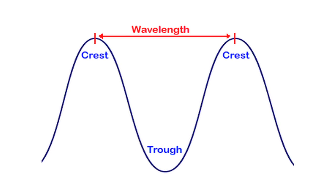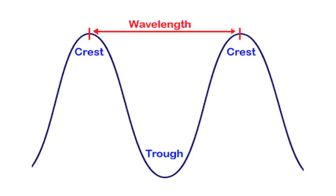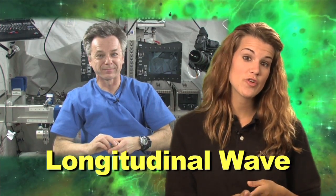Let's watch Canadian Space Agency astronaut Bob Thirsk on the International Space Station as he demos a different kind of wave, a longitudinal wave.